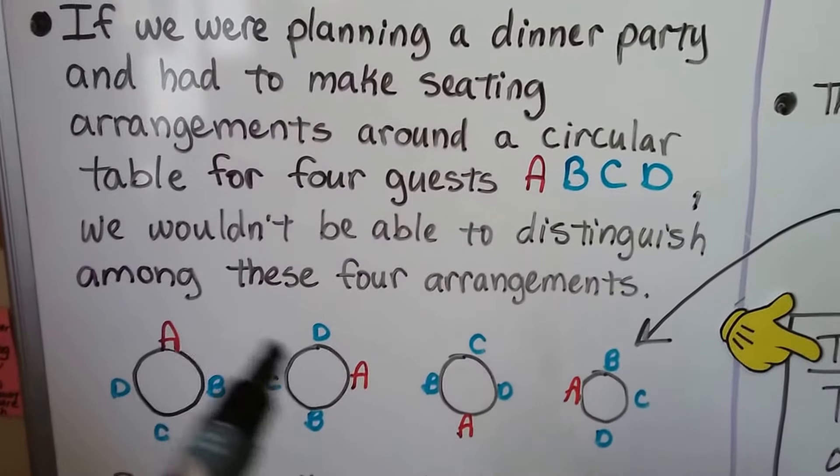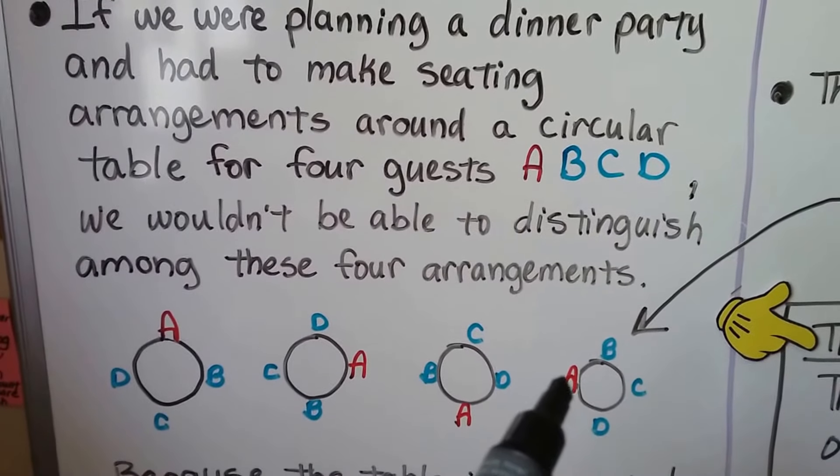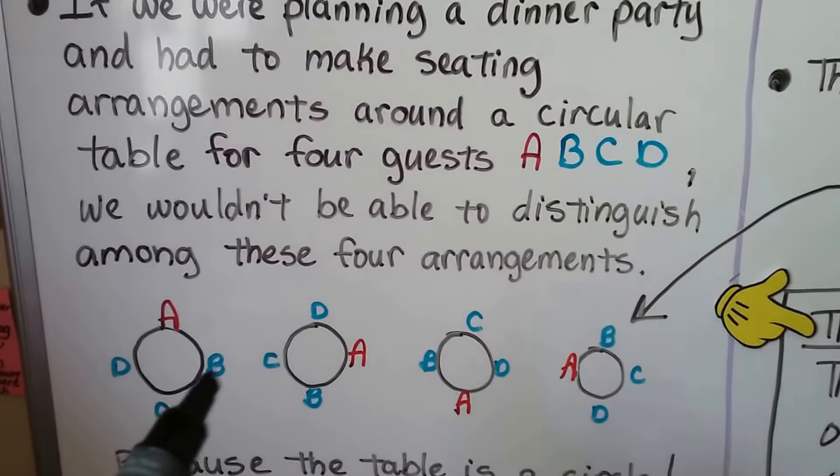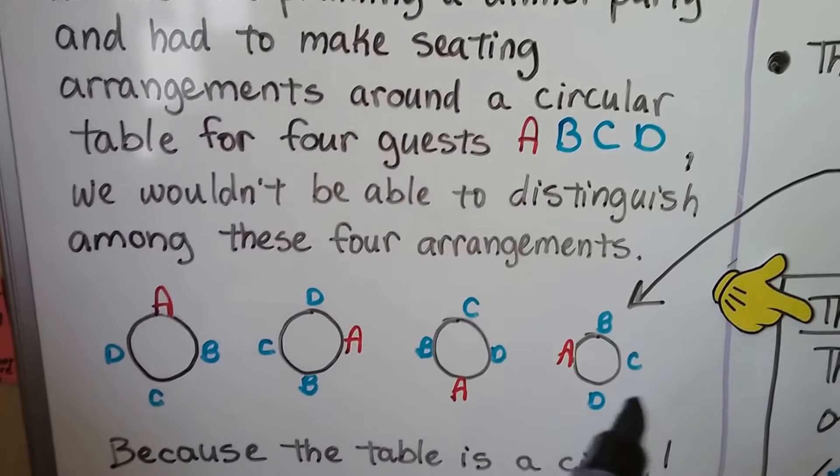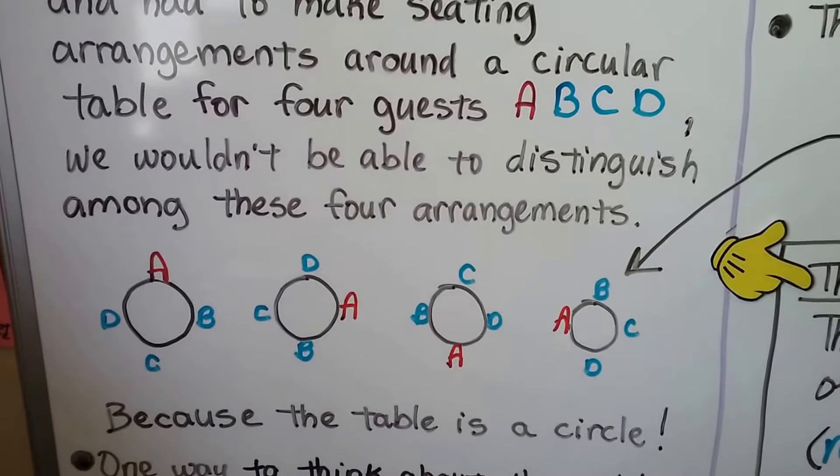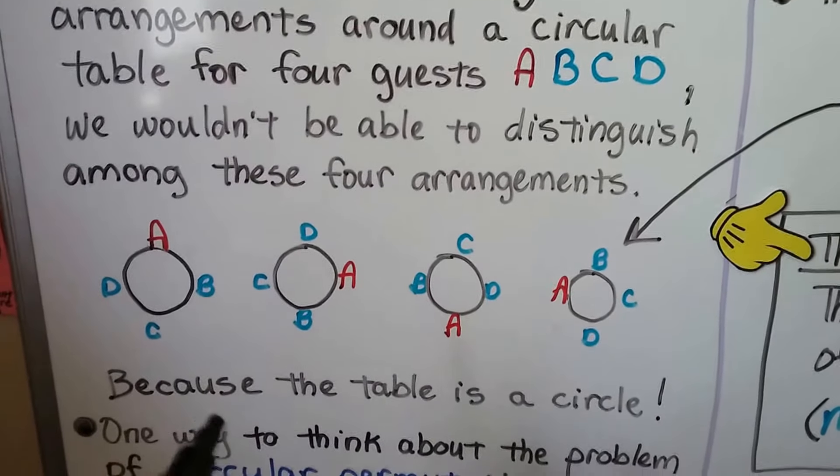Here we have A on the top, then it's on the right, then it's on the bottom, then it's on the left. But if you look, B, C, and D are still going clockwise around from where A is. It's because the table is a circle.